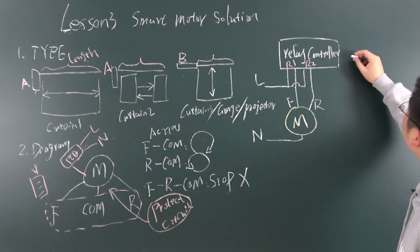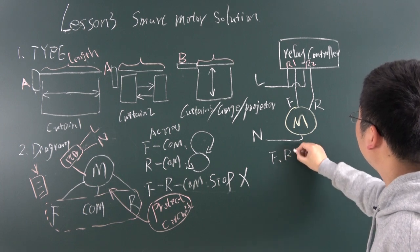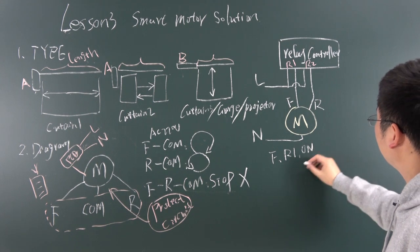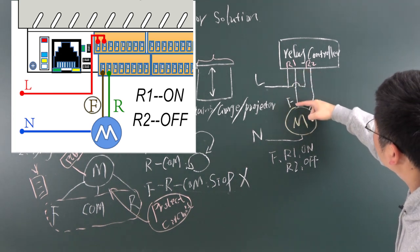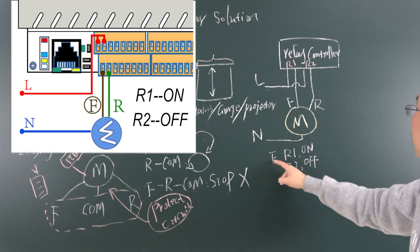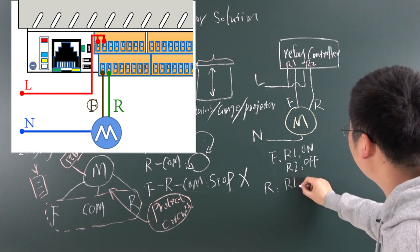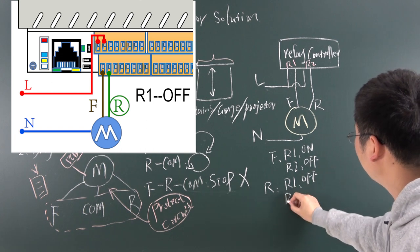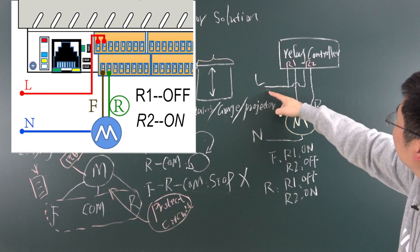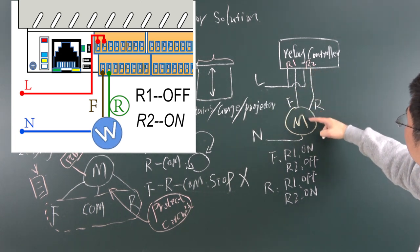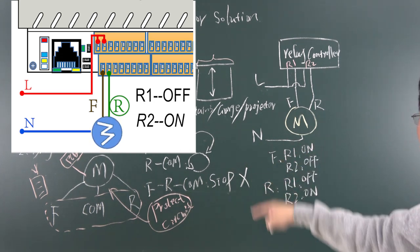When relay one is ON and relay two is OFF, the L will go through relay one to F on the motor and back through COM to neutral - this will run the motor forward. Then to just change directions, relay one goes OFF and relay two goes ON. So the L will go through relay two to R and back to the motor COM and back to the neutral line. This is how to control the motor in reverse - just switch which relay is active to change the running direction.